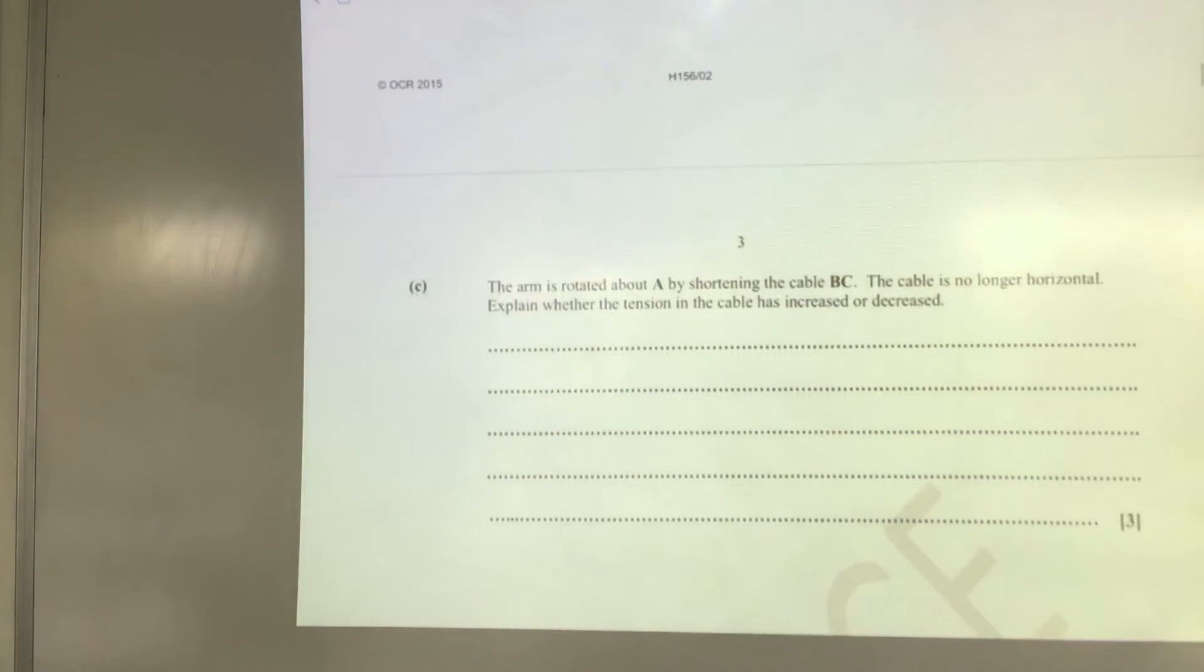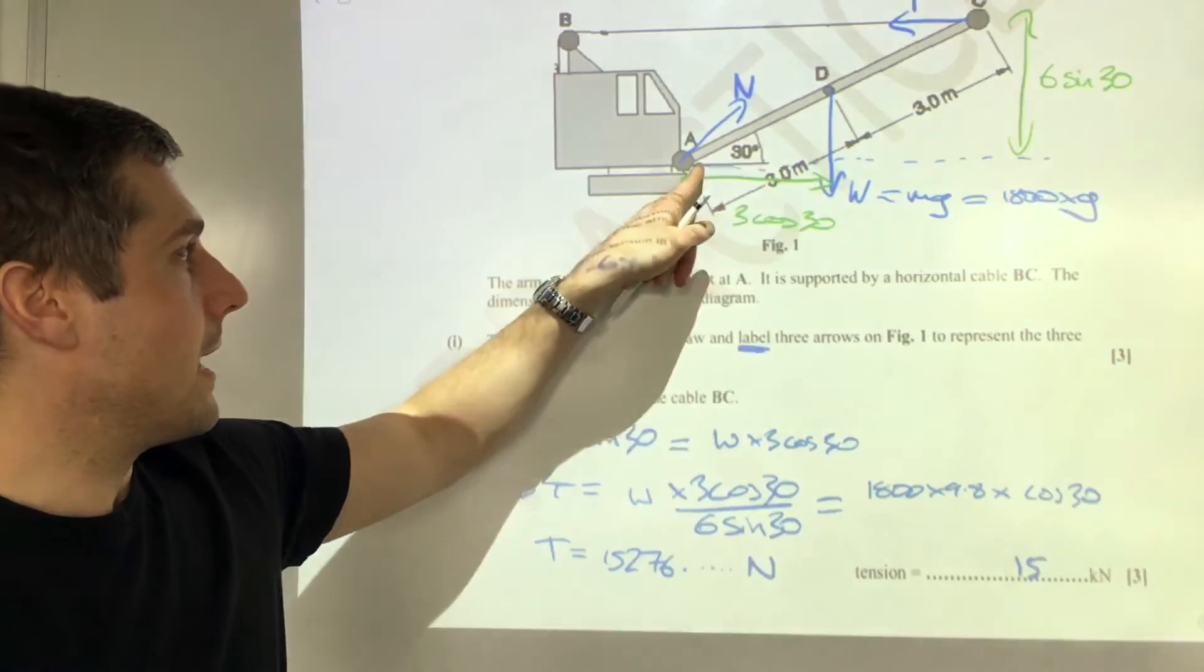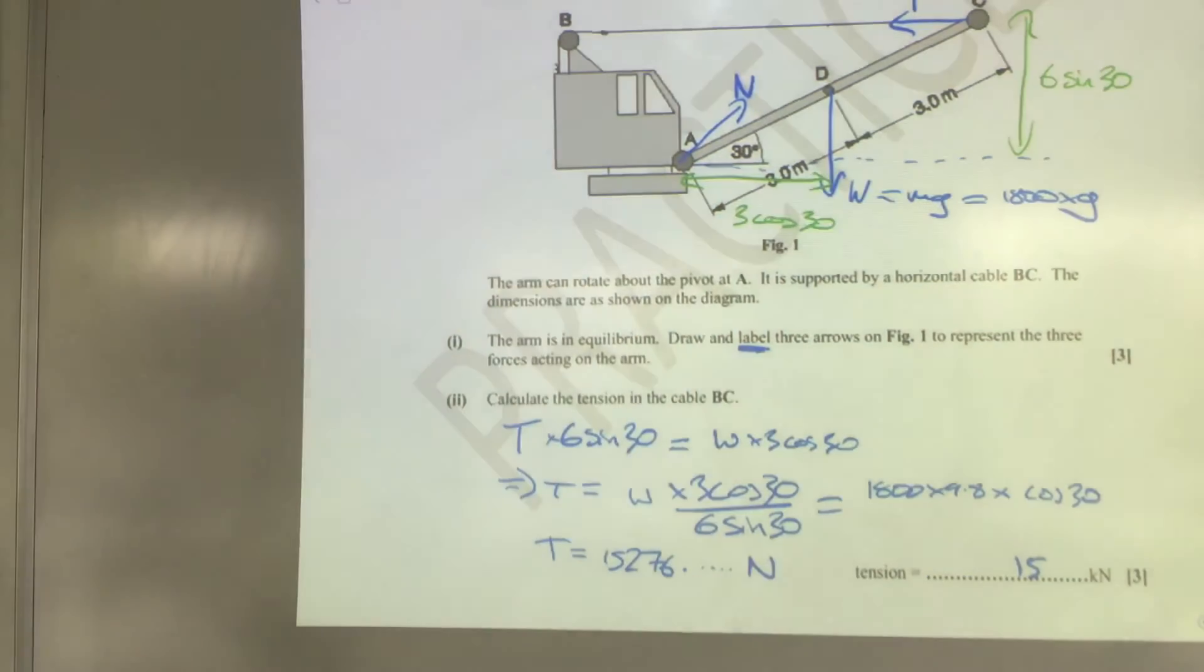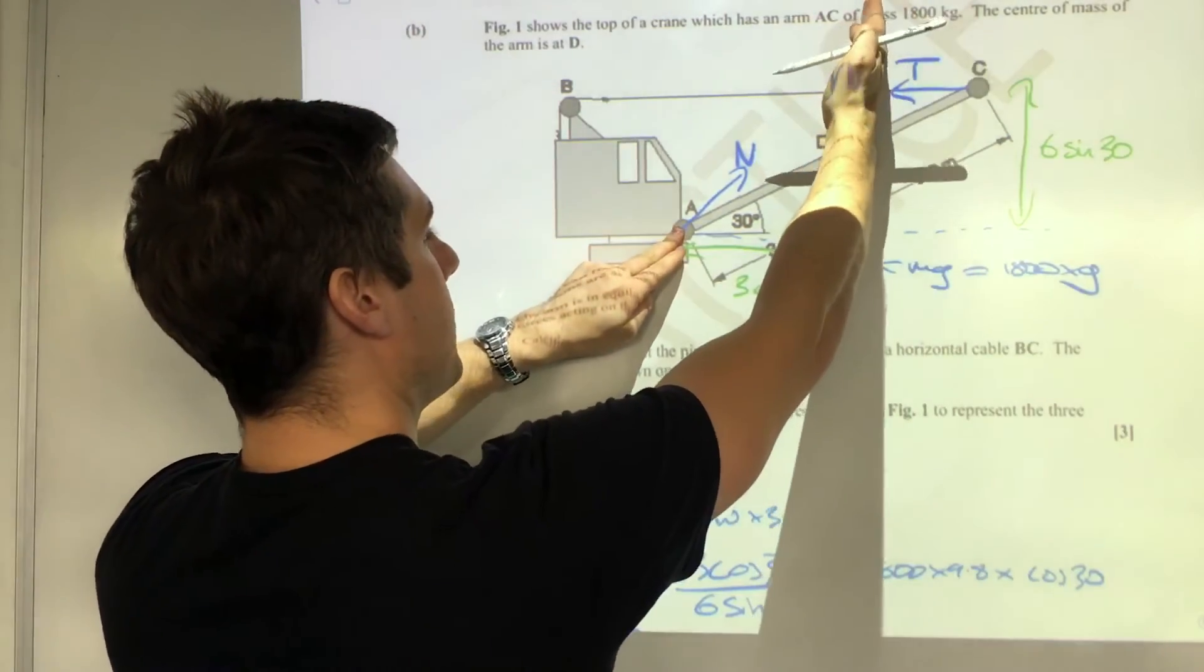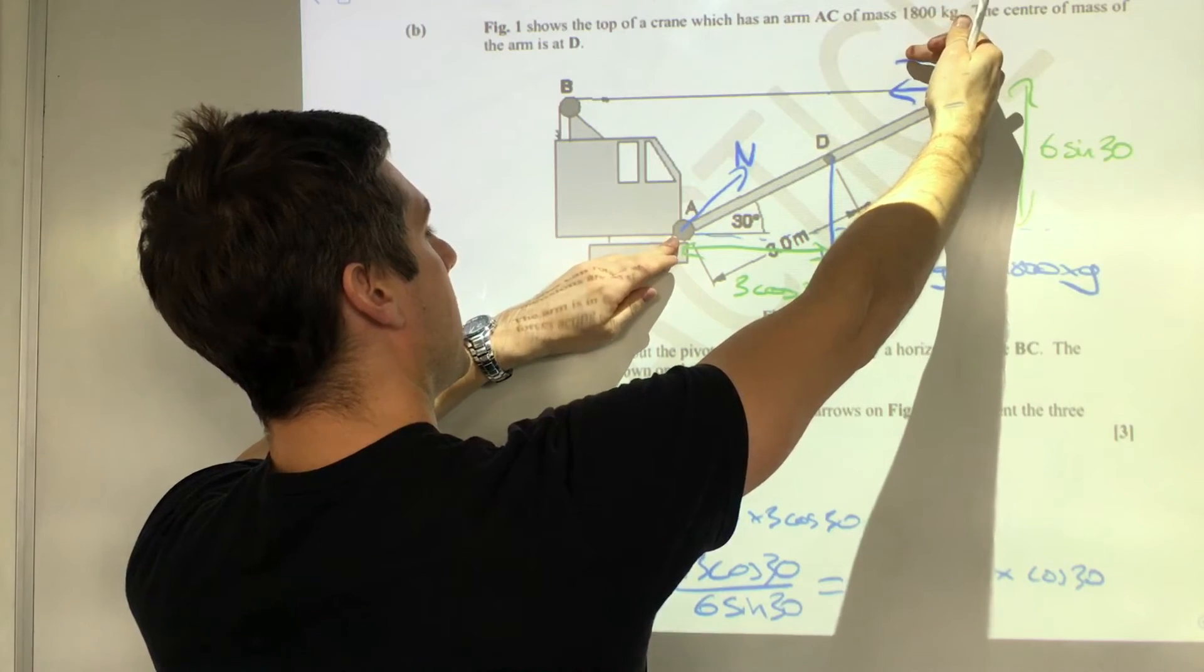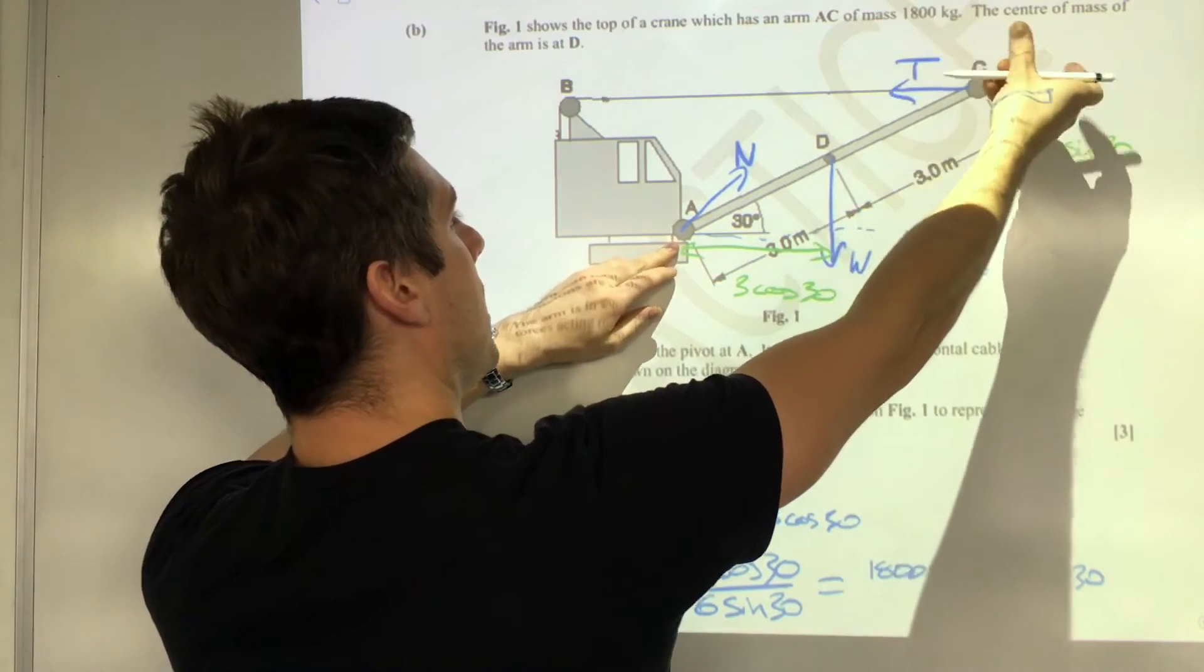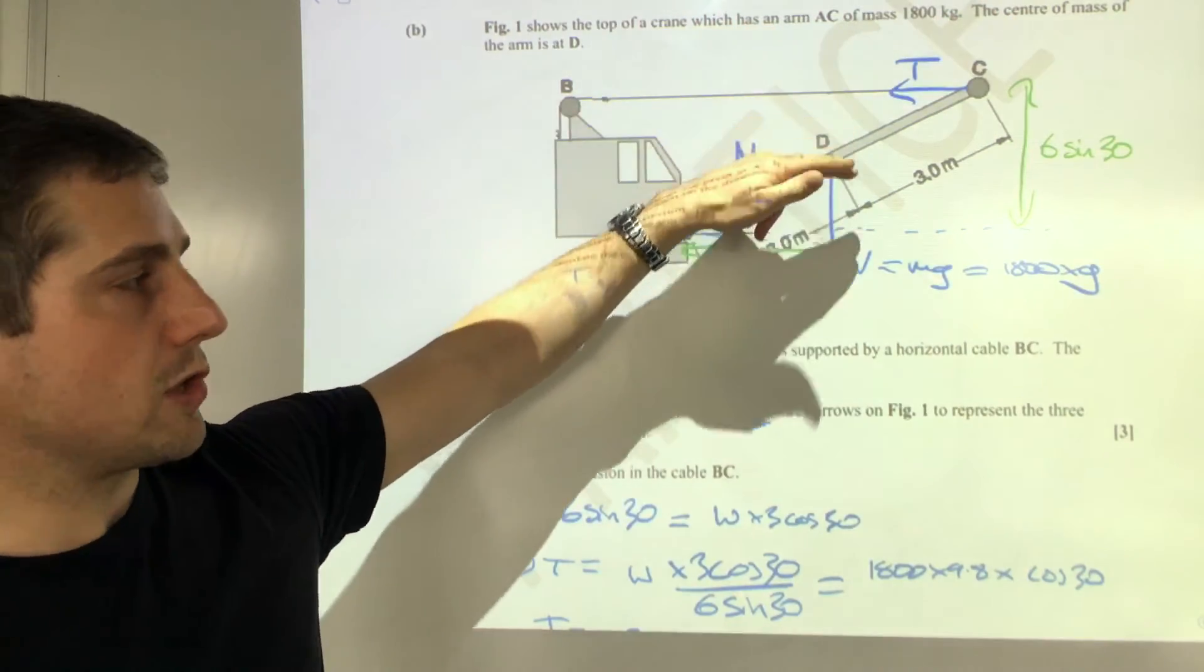We can write that down first: the moment about A due to the weight will decrease as the lever arm has decreased, where lever arm means the perpendicular distance between the weight and A. Then also, as this goes up, the horizontal component of the tension will be acting at a higher height, so the lever arm of the tension will increase.